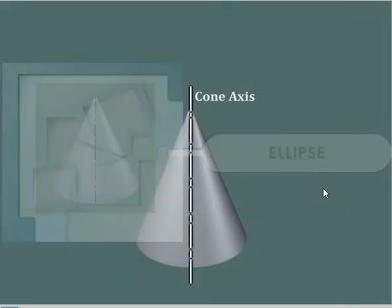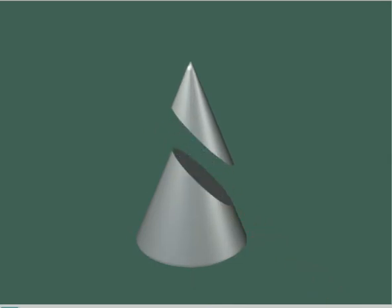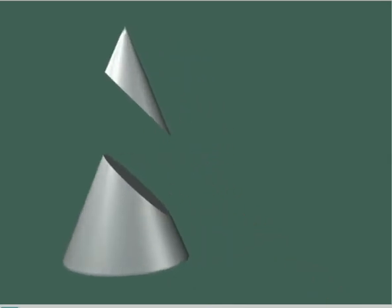Ellipse. When the section plane is inclined to the axis and cuts all the generators of the cone, we can get ellipse as the conic section.